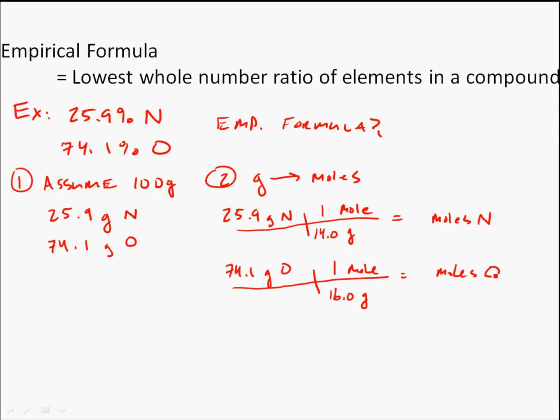Somebody with a calculator wouldn't mind helping me out. 1.85 moles of nitrogen. And what would oxygen be? 4.6 moles. We'll call it 4.60.